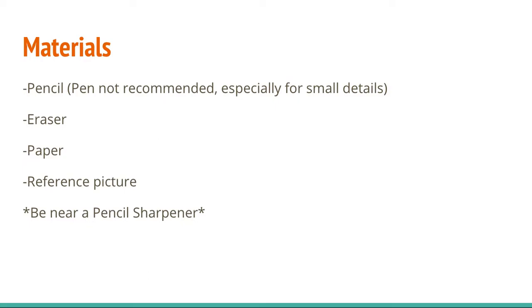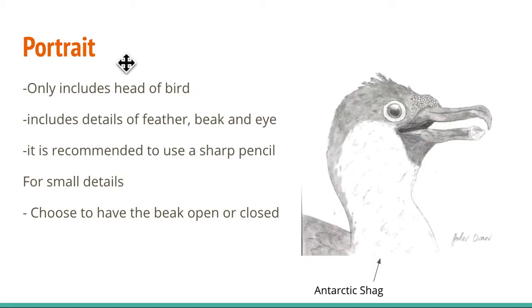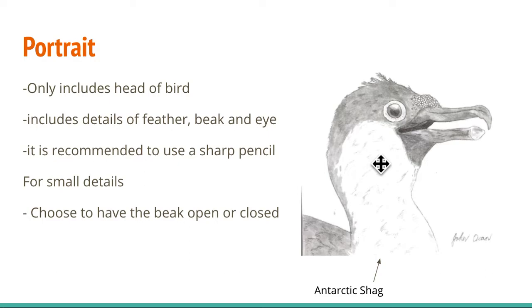Before we start drawing the bird, I'll go over the different types of bird drawings that you can make. The first one is the portrait. This only includes the head of a bird, similar to portrait photography. The main thing about the portrait is that you can go into very small detail on the feathers in the head, the eye, and the beak. It is recommended to use a very sharp pencil for these small details, and you can choose to have the beak open or closed. As you can see in the drawing, I chose to have the beak open — this is an Antarctic shag.